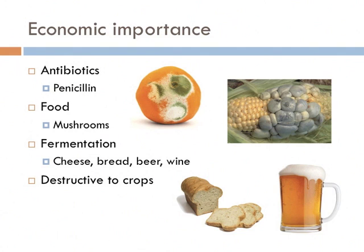But fungi do have a dark side. They can also wreak havoc on human crops. Corn is especially susceptible to disease caused by a fungus. Here's an example of an aptly named corn smut, and when it hits a field, it can damage an entire farm full of corn. And unlike bacteria, fungi are much more difficult to kill with chemicals.